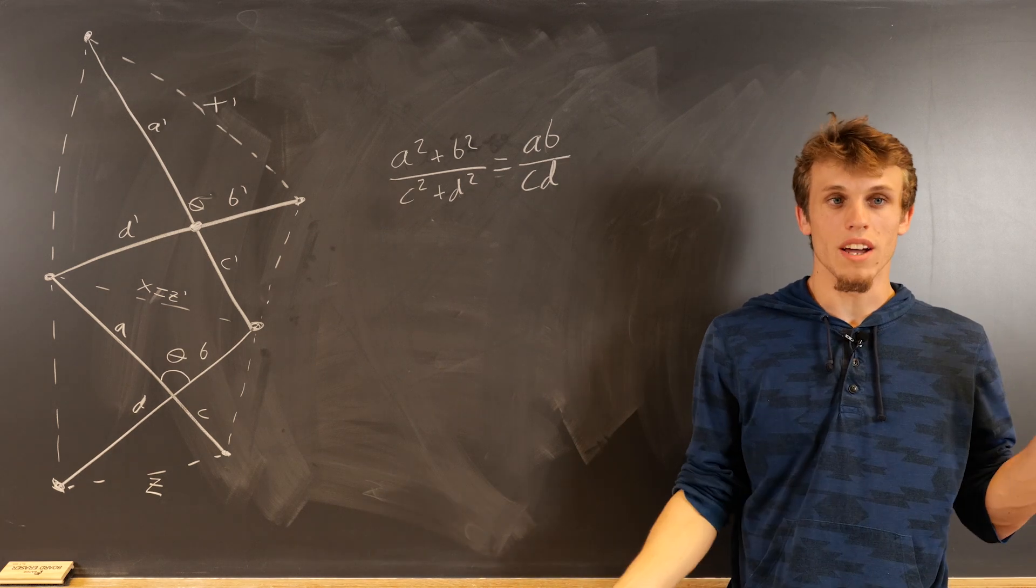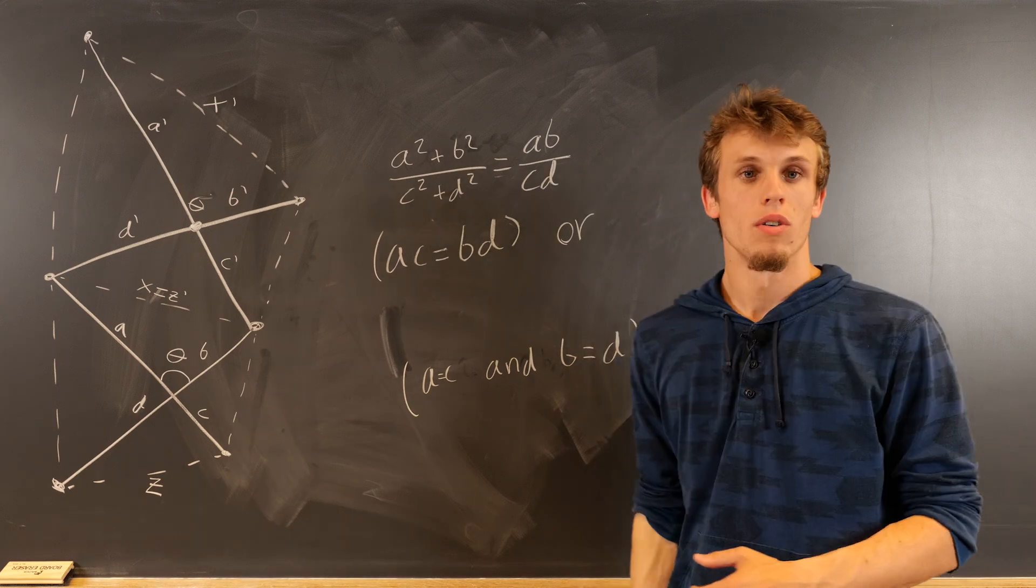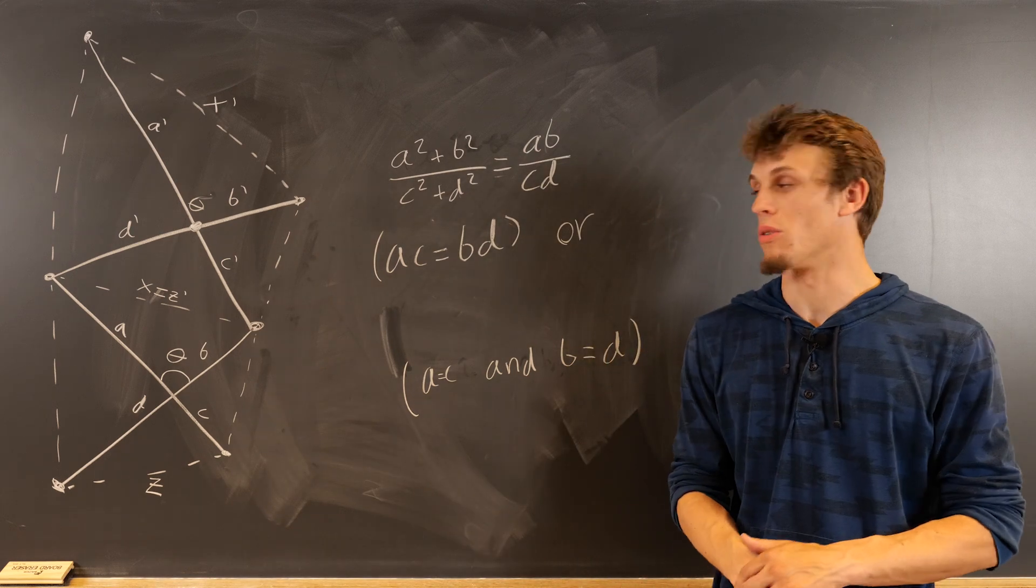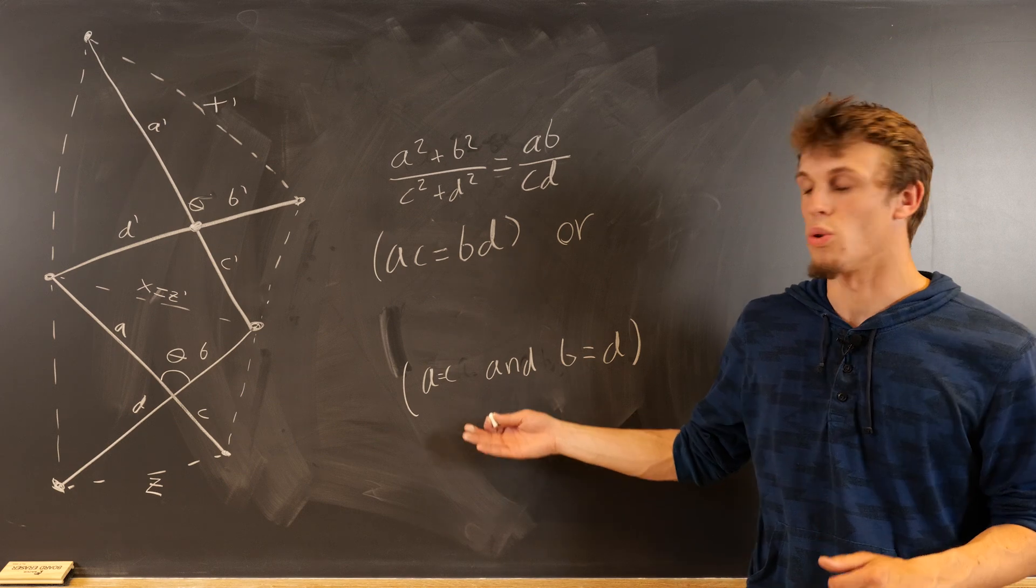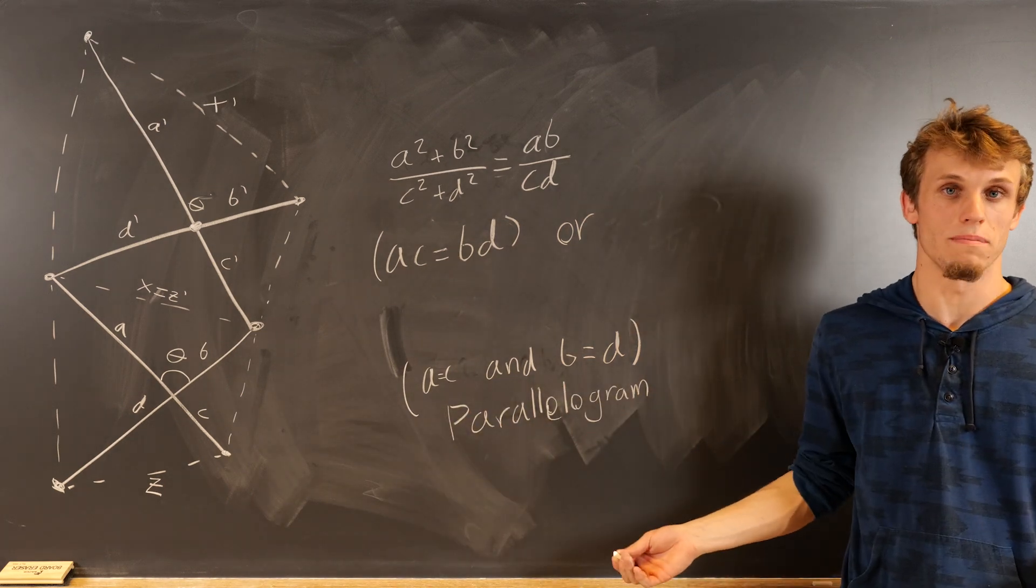If we break up this constraint, we find two possibilities for the original scissors quadrilateral. This constraint, this possibility corresponds with being a parallelogram.